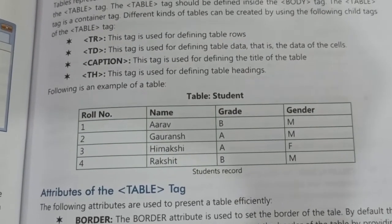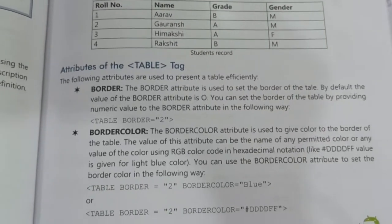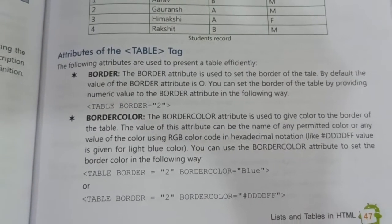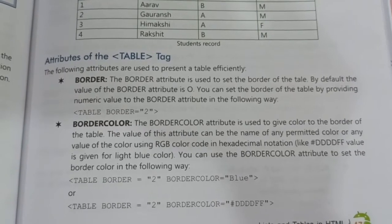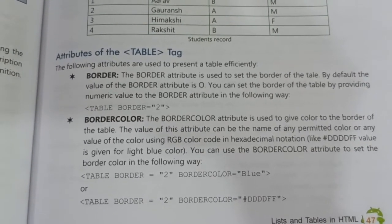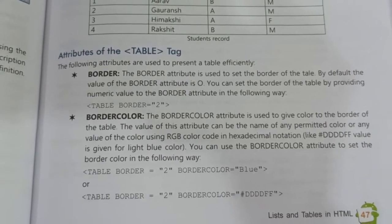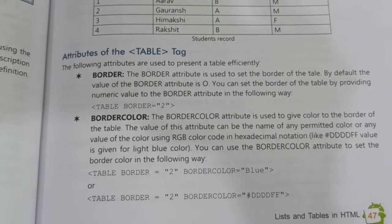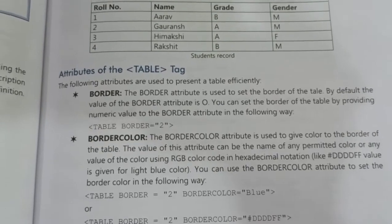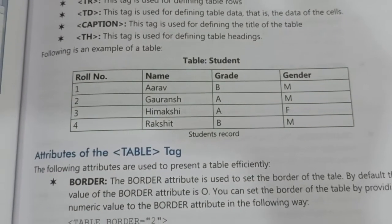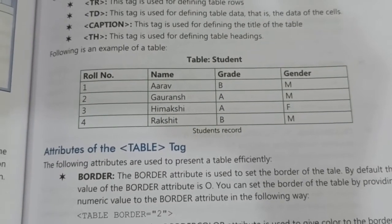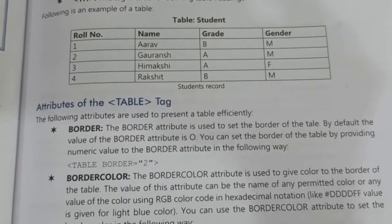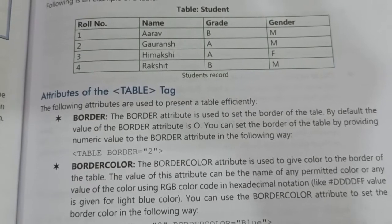Here is an example of the table tag. Now let's look at the attributes of the table. The first attribute is border. The border attribute is used to set the border of the table — that is, the lines drawn on all four sides of the table. Using the border attribute is necessary to display a border.